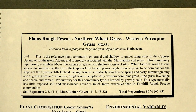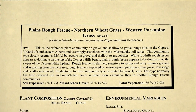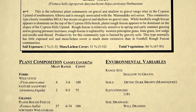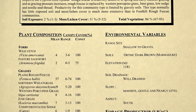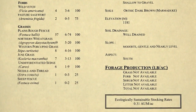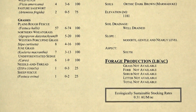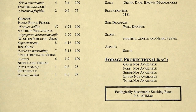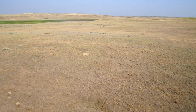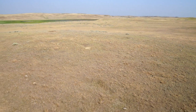Once the appropriate plant community is identified, detailed information is available to apply the health indicators, including dominant plant species, plant community structure, expected bare soil, and ground cover. A recommended ecologically sustainable stocking rate is also provided for each community. In this video, we will also consider the two driest of the grassland natural subregions: the dry mixed grass and mixed grass.